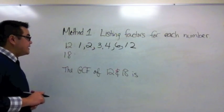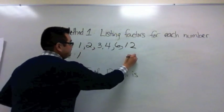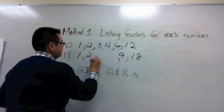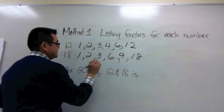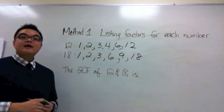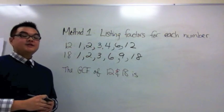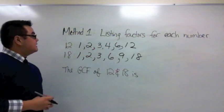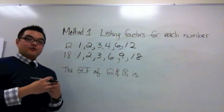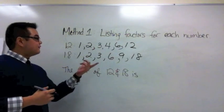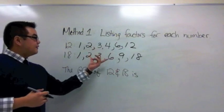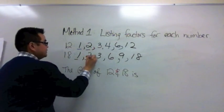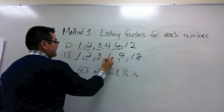We're gonna follow the same thing for 18. We have 1 and 18, 2 and 9, and 3 and 6. Now that we have listed all the factor pairs for each number we can compare the list with each other. Since GCF stands for greatest common factor we're gonna look for a common factor between both lists. Both of them has a 1 in it, a 2, a 3, and a 6.